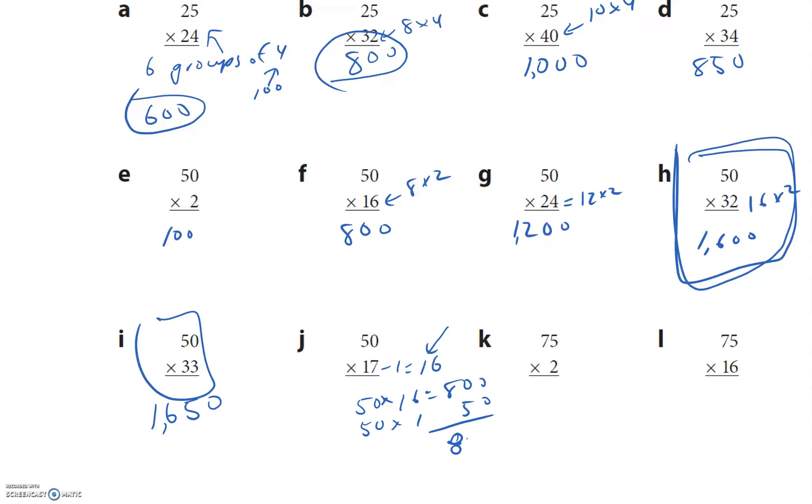Now 75 times 2: I have three quarters plus three quarters, 150 cents. 75 times 16: so every one is 75, every two is a dollar fifty. How do you want to do this? Every four equals four times 75 equals 300. How many fours in there? Four times four times 300 is 1200.